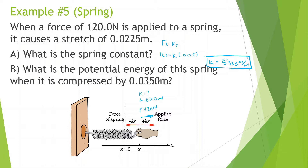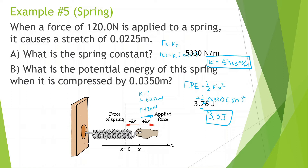What is the potential energy of this spring when it is compressed by 0.035 meters? Elastic potential energy is equal to one half kx squared, so this is going to be equal to one half times k, 5,333, times x, 0.035, squared. 0.035 squared times 5,333 times 0.5, and we get around 3.3 joules. That's how much energy we stored. Not that much energy.